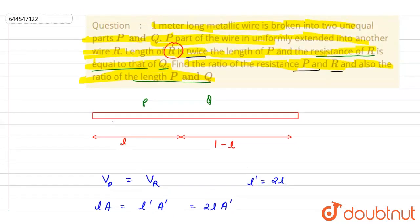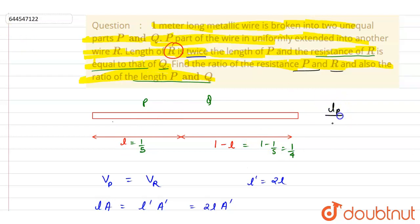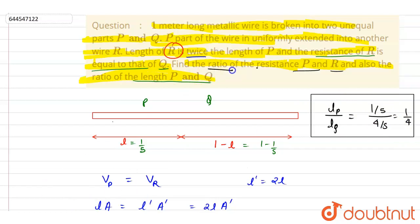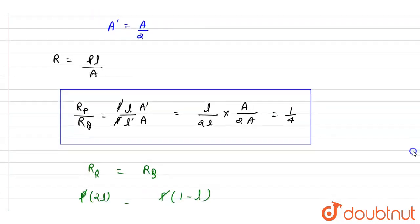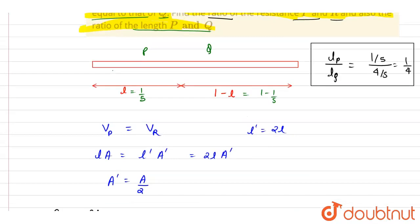Since l equals 1/5, lP = 1/5 and lQ = 1 − 1/5 = 4/5. Therefore, the ratio lP to lQ is 1 to 4. So the ratio of the length of P to Q is 1/4, and the ratio of resistance of P to R is also 1/4. These are the correct answers.